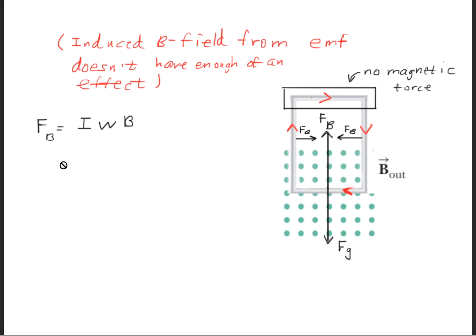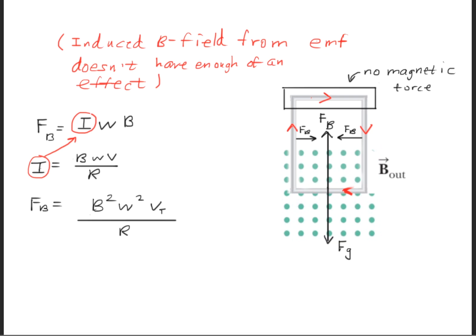Now we'll write what the magnetic force is equal to. The magnetic force equals the current times the width times the magnetic field. Taking the equation found for the current and substituting, we get that the magnetic force equals the magnetic field squared times the width squared times the terminal velocity, divided by the resistance.